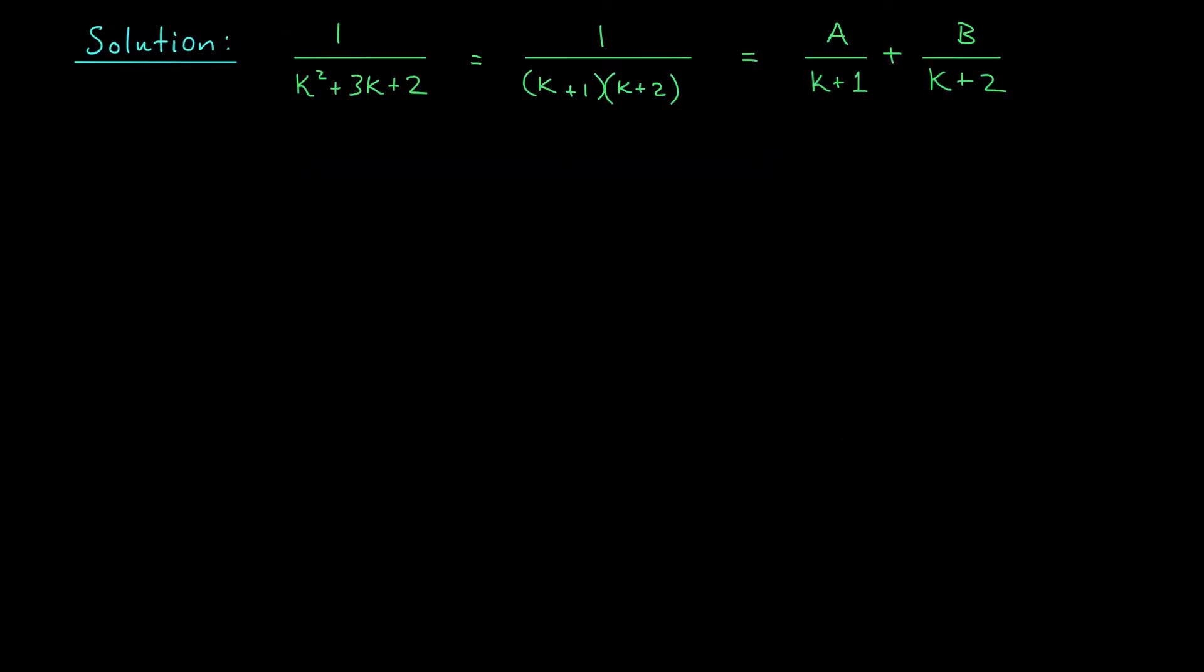According to the hint given in the question, it will be helpful to first find the partial fraction decomposition of a general term in our series before we compute the partial sums. So, in order to find the partial fraction decomposition, I've started by factoring the denominator as k plus 1, k plus 2. We'd like to break this up as a constant a divided by k plus 1 plus a constant b divided by k plus 2. The question is, what are the values of a and b?